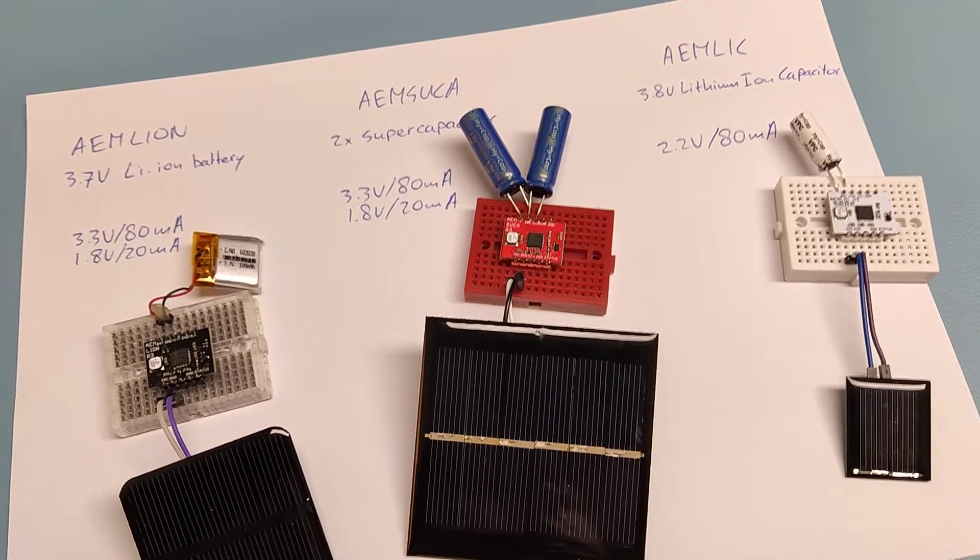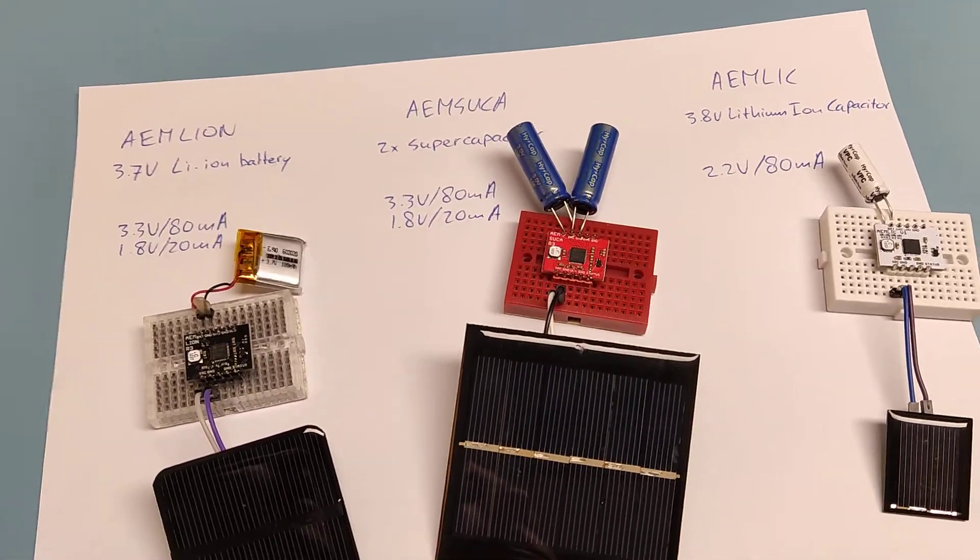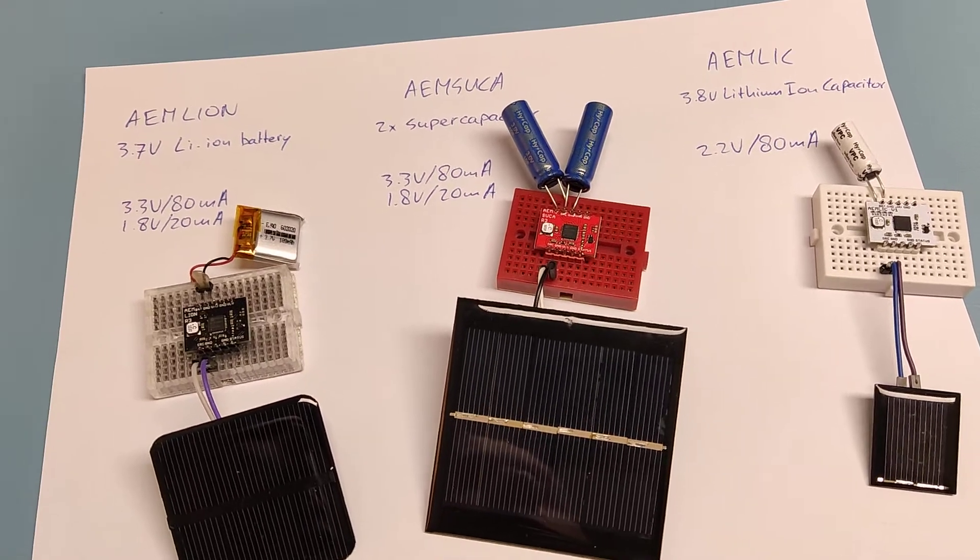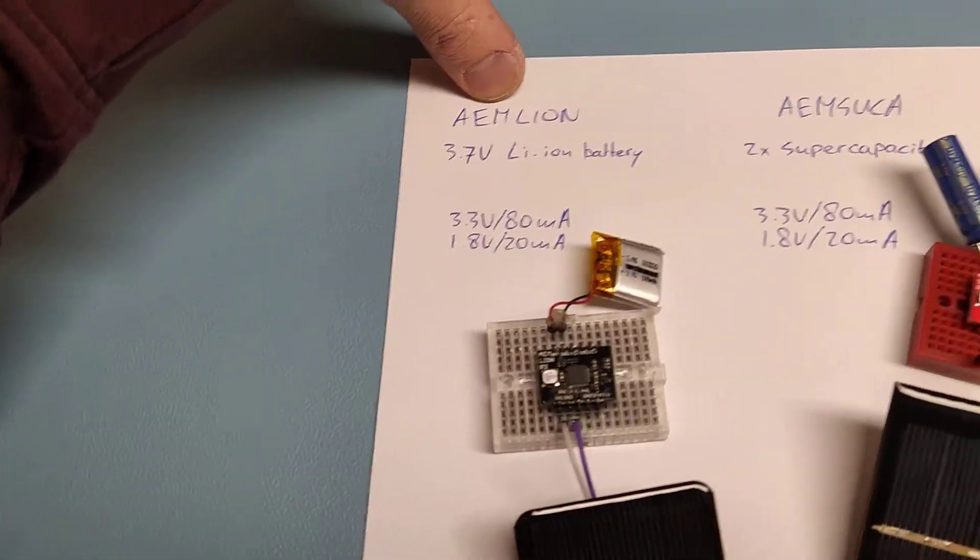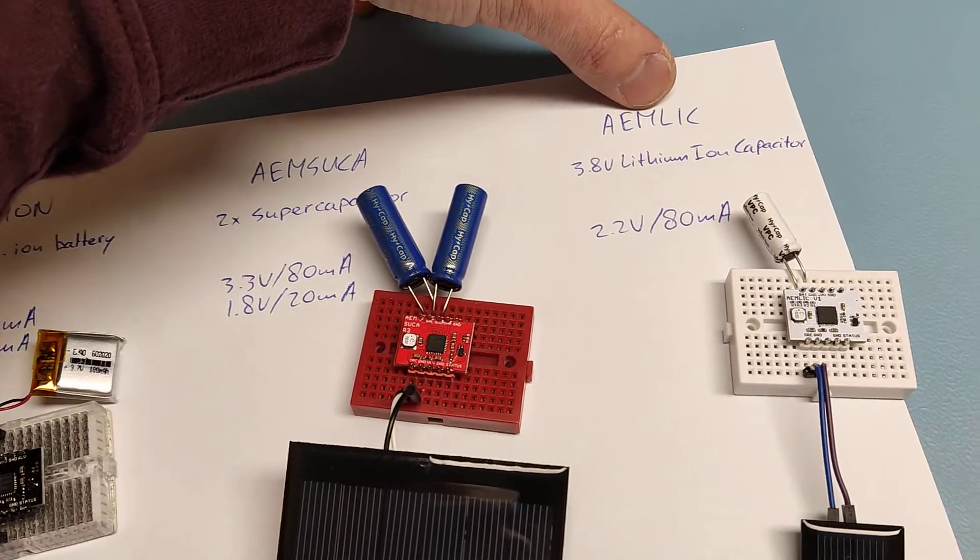These are three tiny solar harvesting boards that I am currently selling on Tindy. They are called the AEM Lion, the AEM Suka, and the AEM Lick.